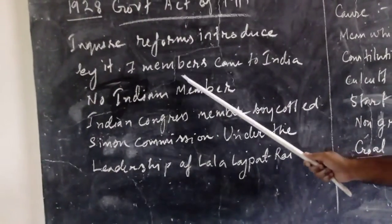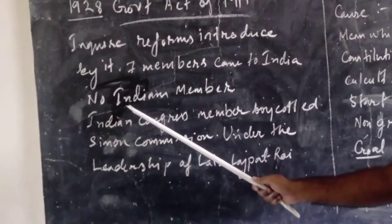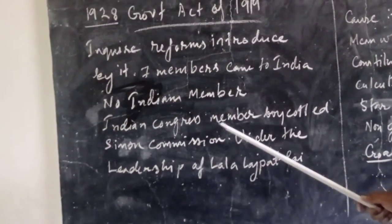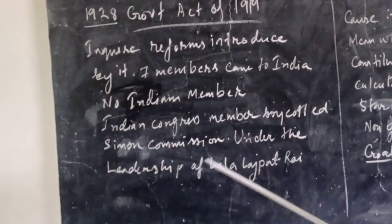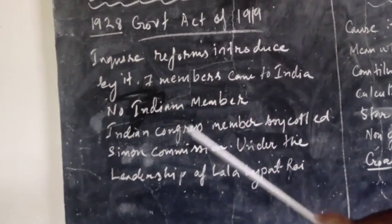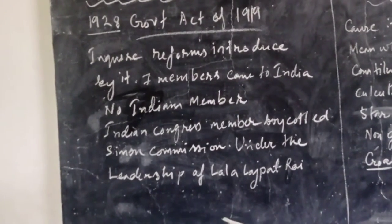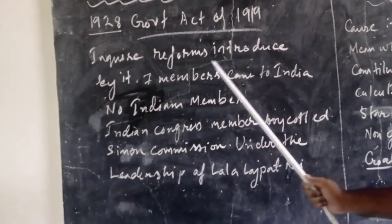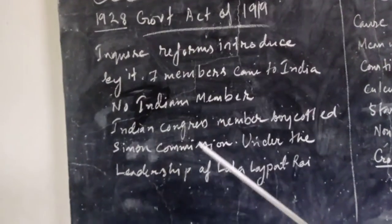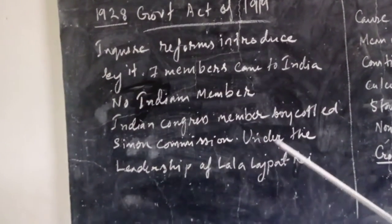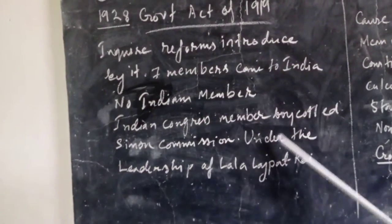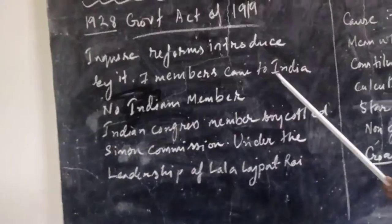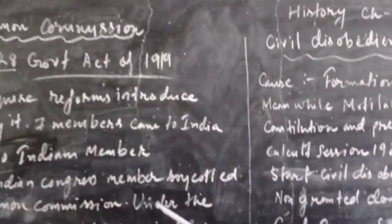So when Indians came to know that there were no Indian members, the Indian National Congress boycotted the Simon Commission. They gave the slogan 'Simon go back,' and under the leadership of Lala Lajpat Rai they protested against the Simon Commission.